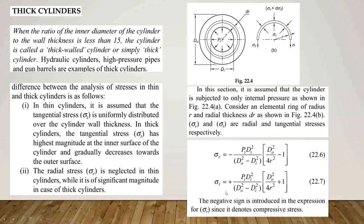And sigma-t, the tangential stress, equals PI times DI² divided by (DO² minus DI²) times (DO²/(4R²) plus 1). For radial stress, the minus sign denotes compressive stress.